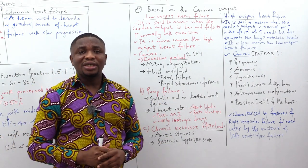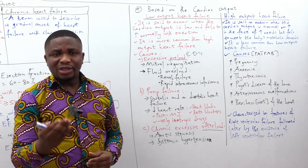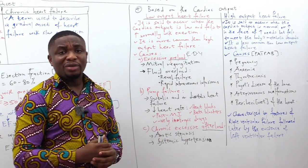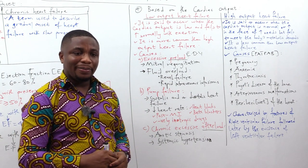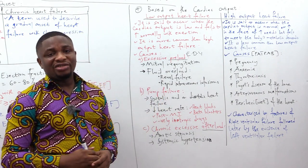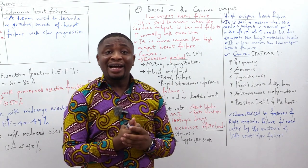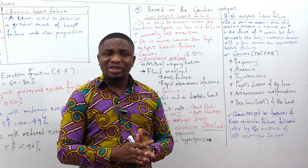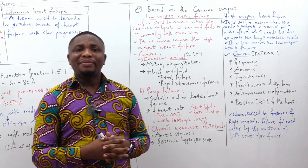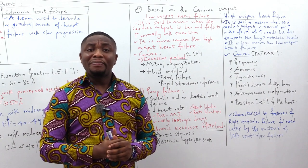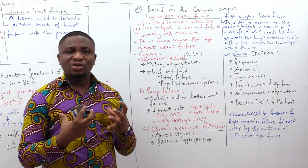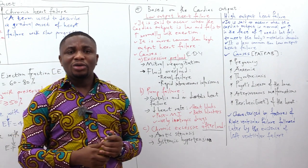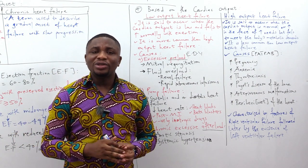The second group of causes is pump failure. Pump failure can result from systolic and/or diastolic heart failure. Reduced heart rate is another contributor — heart blocks (first, second, and third degree) can cause the heart rate to be so low that it affects the pumping ability of the heart. Beta blockers decrease beta-1 activity on the heart, thereby reducing heart rate.